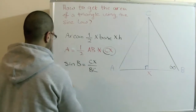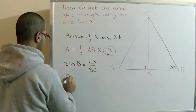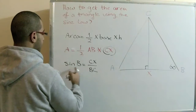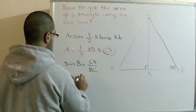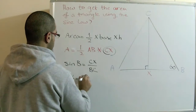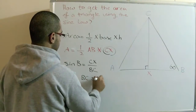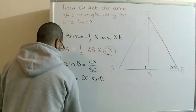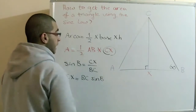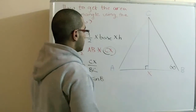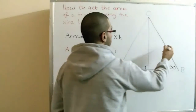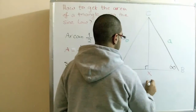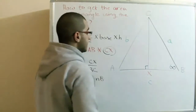So CX equals — we multiply both sides by BC to get CX = BC·sine(B). Now let's name the sides by the names of the angles opposite to them, giving us sides A, B, and C.